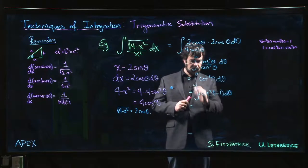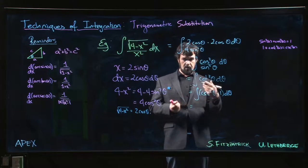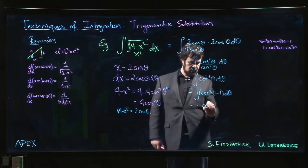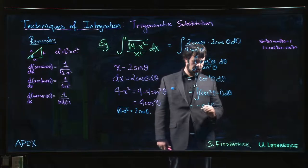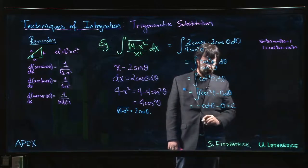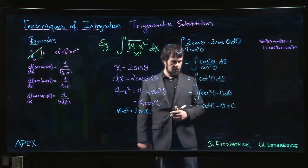And we know that cosecant is the derivative of, well, it's minus the derivative of cotan. So this becomes minus cotan theta minus theta plus c.